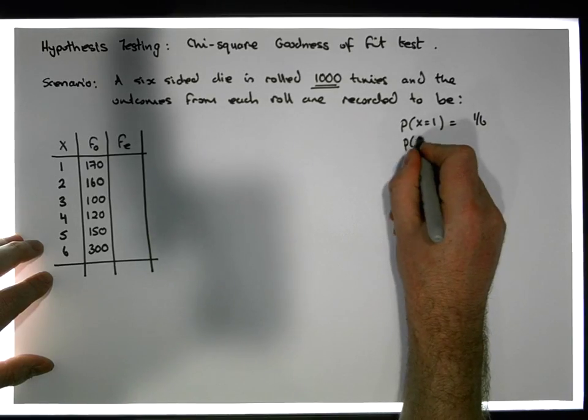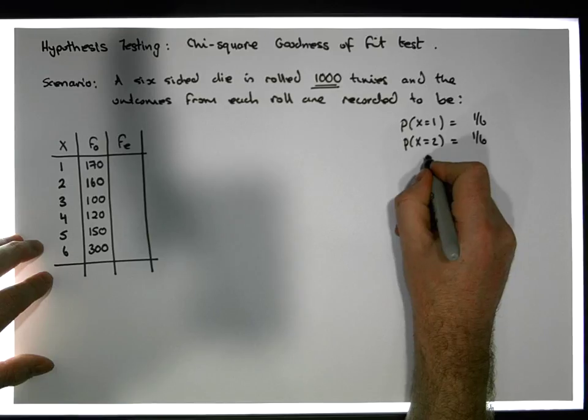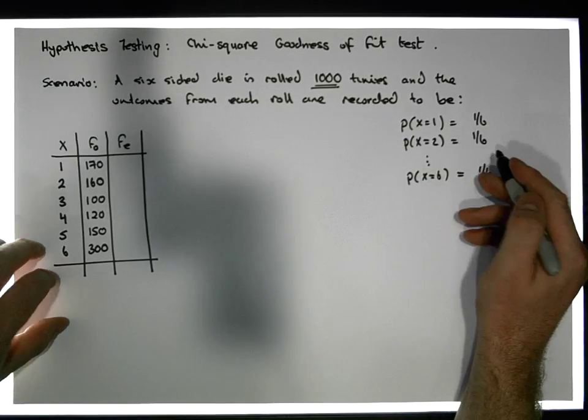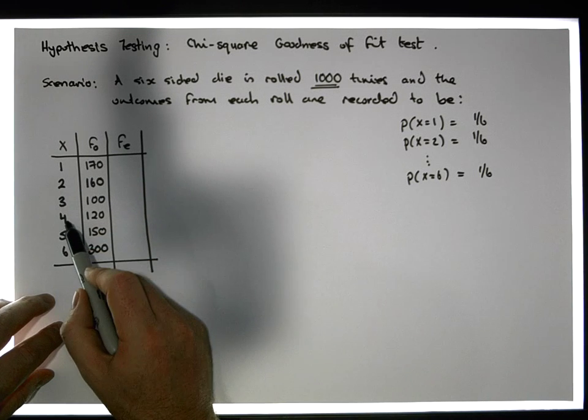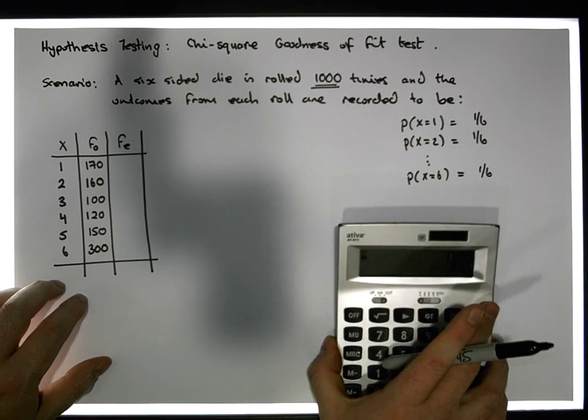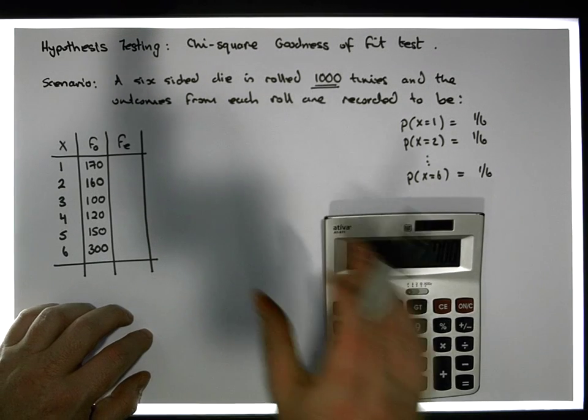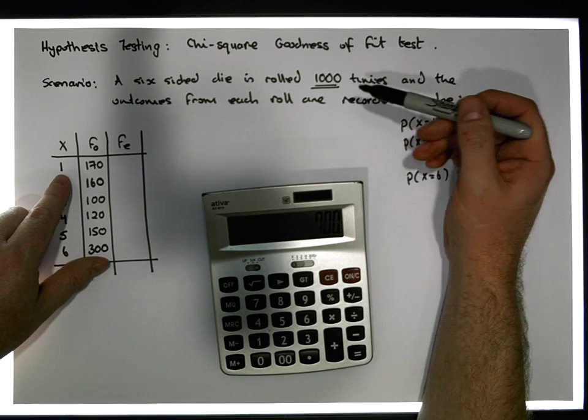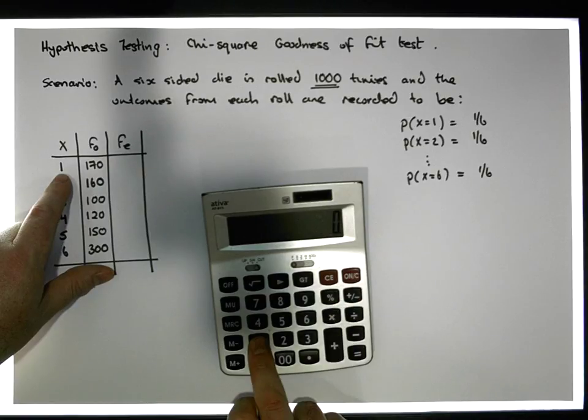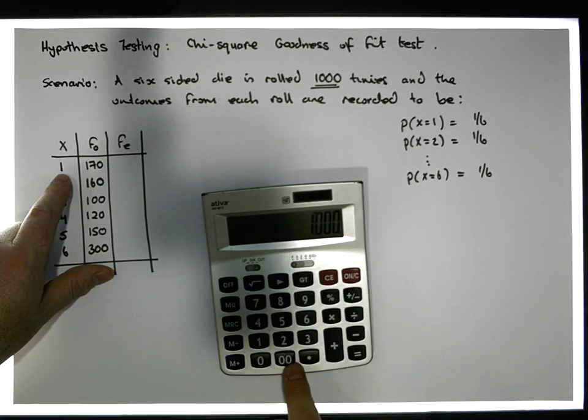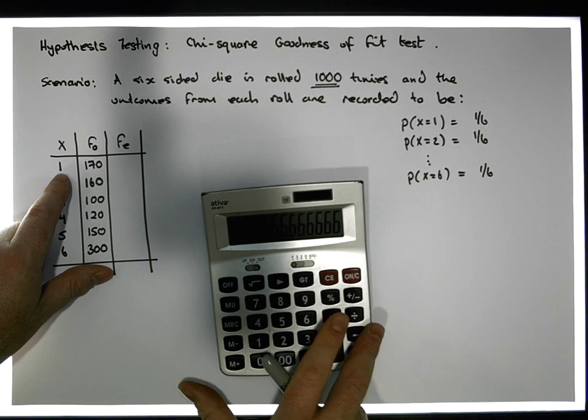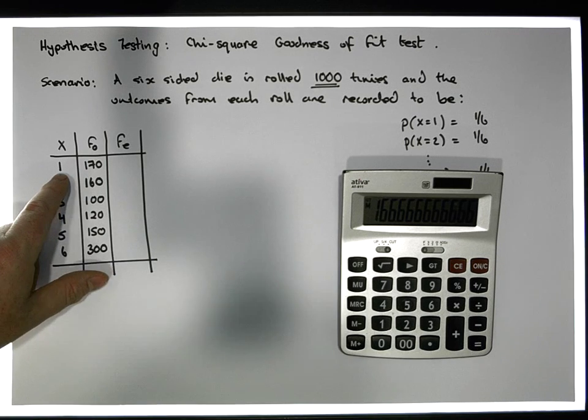You should have a 1 in 6 chance of rolling any particular face value. Let's keep in mind that we've rolled this die 1000 times. Out of 1000 rolls, we would expect that the 1 would occur 1 in 6 of the time, so 1000 multiplied by 1 divided by 6, which is 1000 divided by 6 - we'd expect it to occur 166 or 167 times.